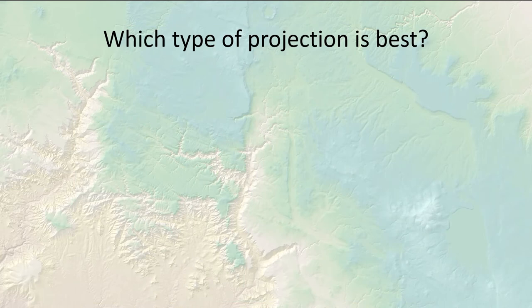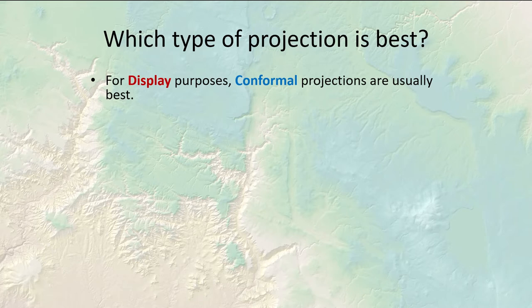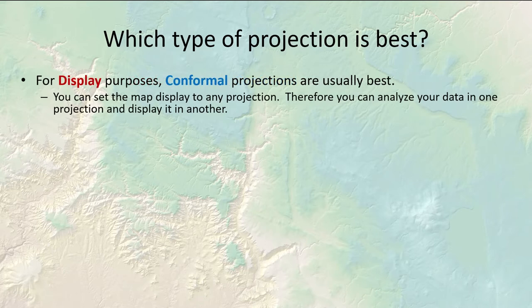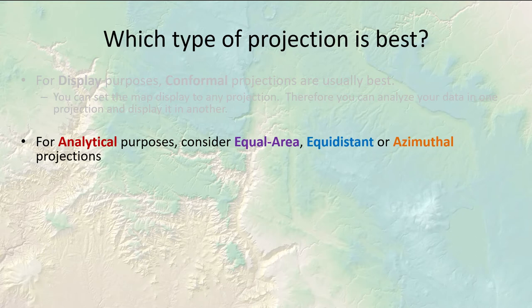So which projection do you use when you're starting your analysis? It all depends on what you're trying to do. If you're making a pretty map, conformal projections are usually what you go with. You can set the map display to any coordinate system, so you can analyze data in one projection and display it in another — you always have that flexibility. For analytical purposes, such as calculating the size of a stand or the distance of a road, you'll probably want equal area, equidistant, or azimuthal projections.